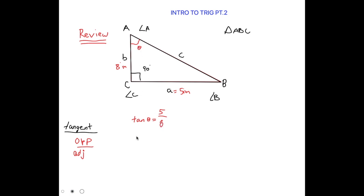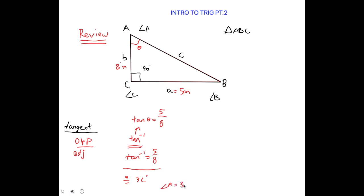Since we're solving for an angle, we use the inverse function, which is on most calculators the shift button and then the tan button. You would get something like tan to the power of negative 1 — this is the inverse function when solving for angles. So if I were to plug this in, I would get tan inverse equals 5 over 8. Plugging this into the calculator, I would get approximately 32 degrees. Therefore, angle A is 32 degrees.